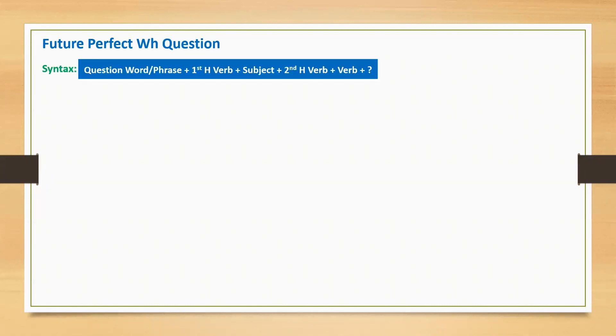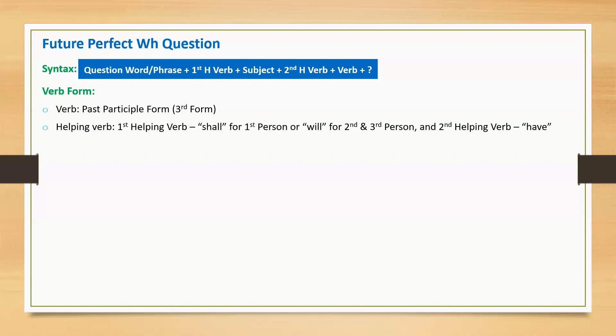Future perfect WH question is an interrogative sentence used to ask for information. The syntax is: question word or phrase, first helping verb, subject, second helping verb, main verb in past participle form, and a question mark at the end. The first helping verb is 'shall' for first person and 'will' for second and third person. The second helping verb 'have' is used for all persons.